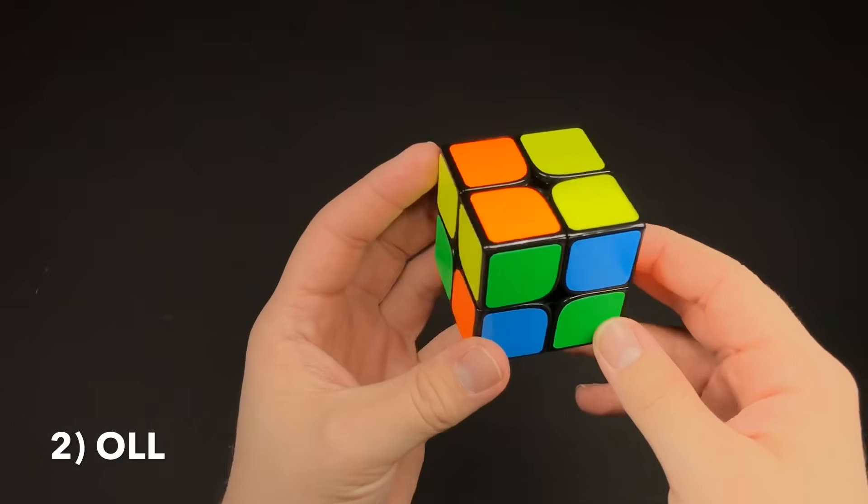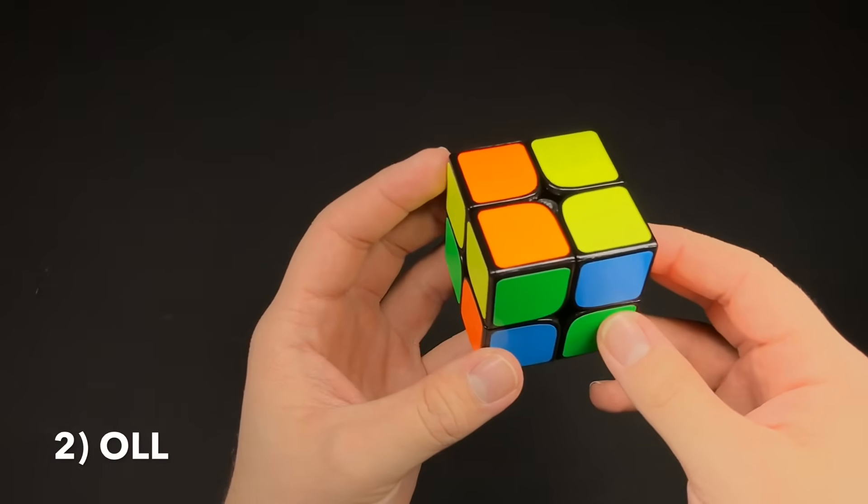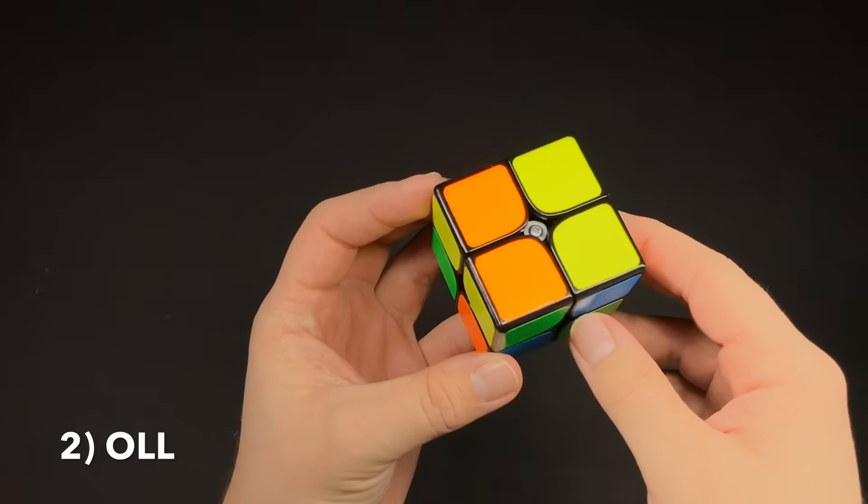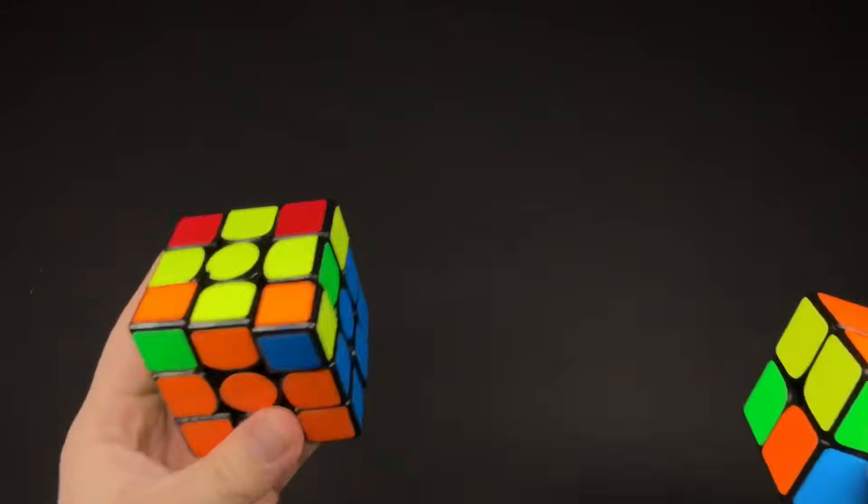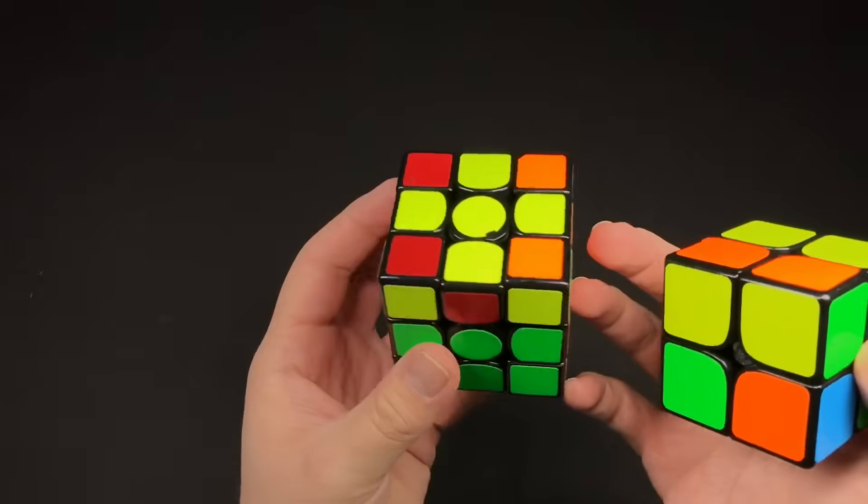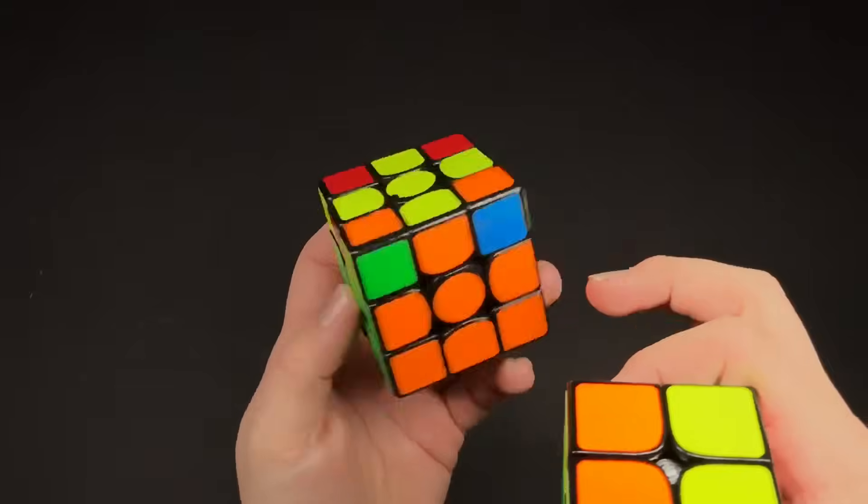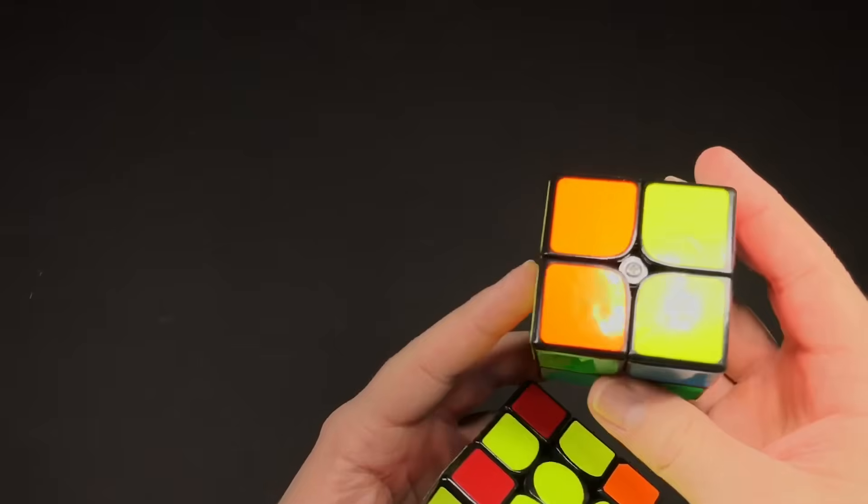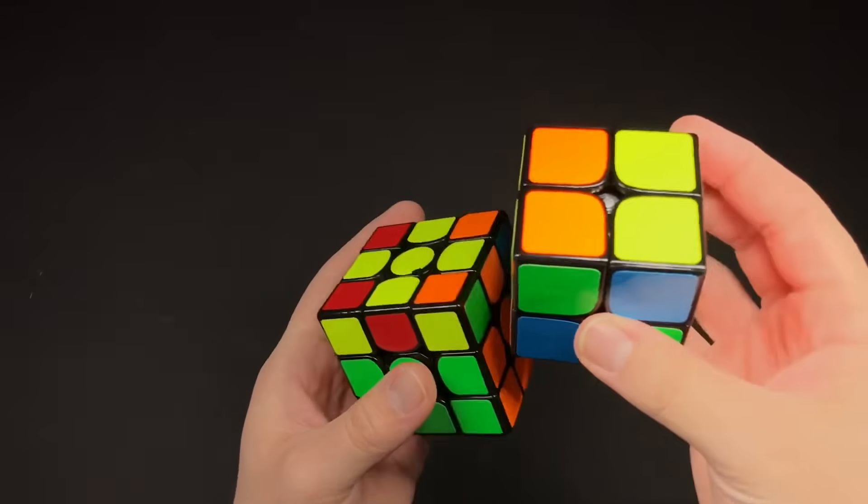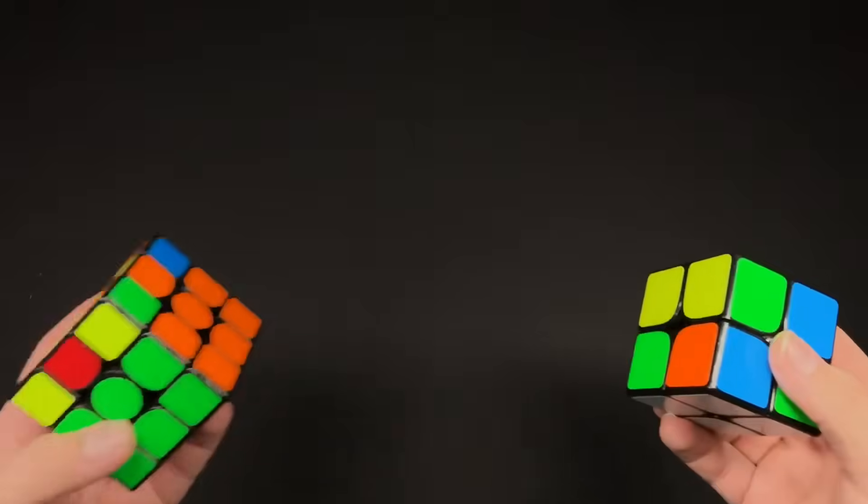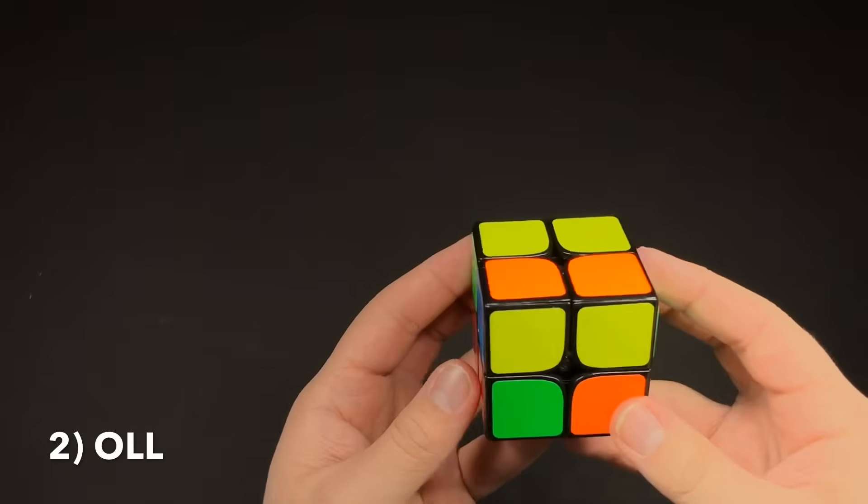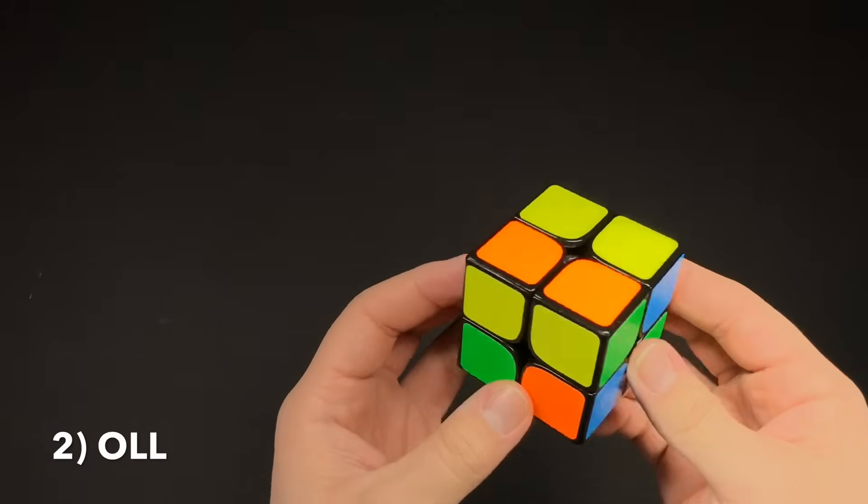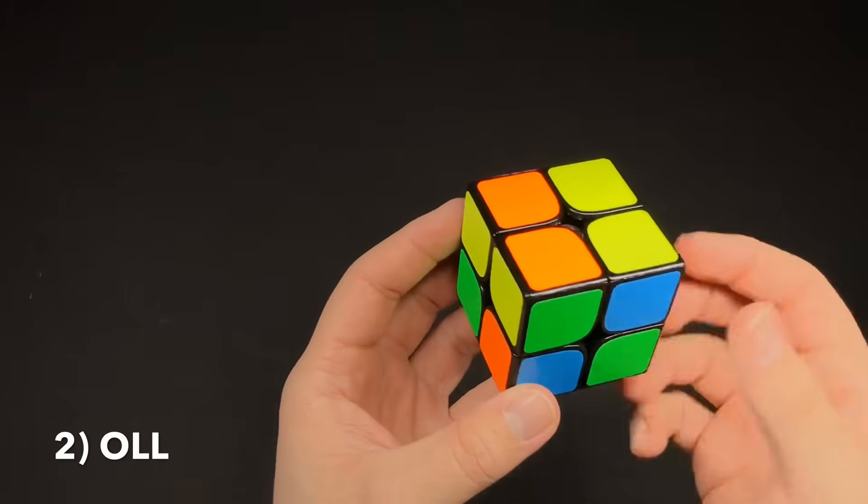The second step for the Ortega method is called OLL, orienting the last layer. This would be similar to on a 3x3 when you would have the yellow cross and you would be orienting the rest of the corners. Just imagine the yellow cross is always solved, so it's only the corners. There are seven different cases that you could run into with all the white on the bottom and you're just trying to solve the yellow on top.